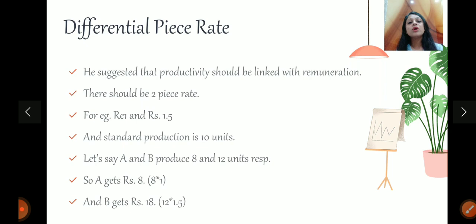So although, worker B has produced four units more, their income became 10 rupees more. Why? Because worker A got eight multiply by one, that is eight rupees, and worker B got 12 multiply by 1.5, that is 18 rupees.